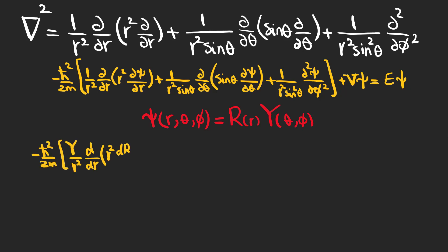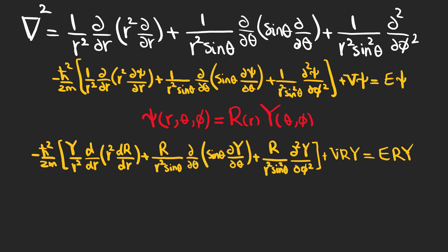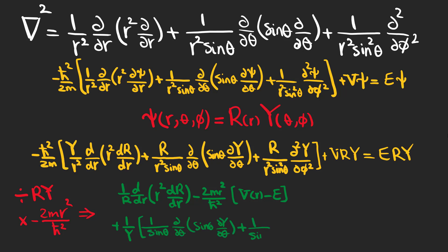Putting this into the Schrödinger equation, we have this expression. And finally, by dividing by r*y and multiplying by minus 2mr squared over h bar squared, we have this equation which consists of a radial part and an angular part, and they both have to be cancelling constants, so the sum of them can be 0.